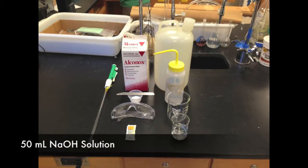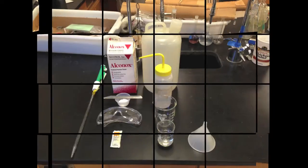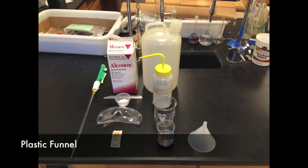The titrant you'll be using is sodium hydroxide. You need 50 milliliters of this to fill your burette up all the way to the 0 milliliter mark. To pour your sodium hydroxide and your Alkonox detergent into your burette, you need a plastic funnel. Any size will work, just make sure that the spout of the funnel fits into the top of the burette.